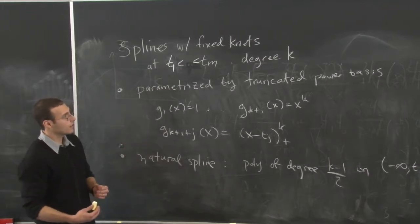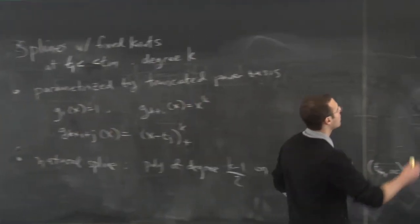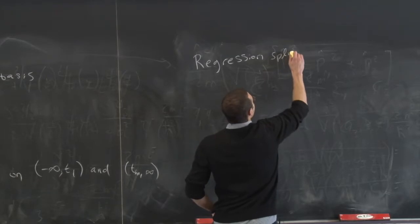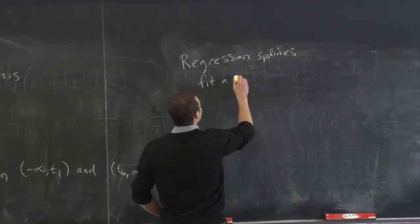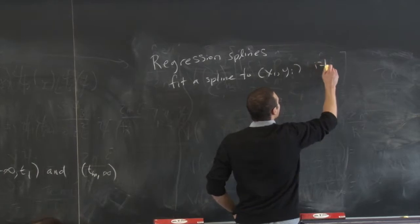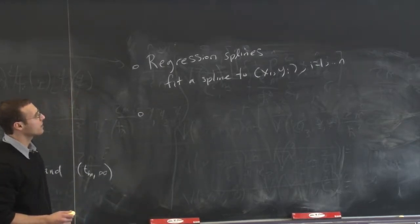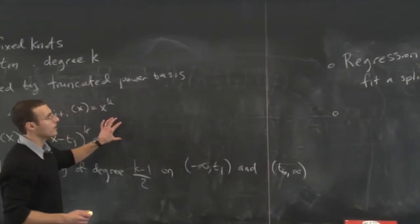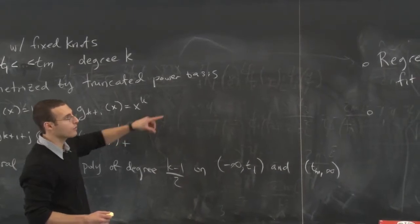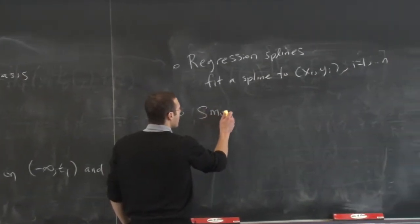To do regression on a spline basis — either the fixed-knot spline or natural splines — we can just do regression, and that's called regression splines. That's just fitting a spline to training data. We just write down, for example, a spline with knots T1 through Tm of degree 3, write down the truncated power basis and their coefficients, and solve using least squares regression. The only other thing we talked about in detail was smoothing splines.